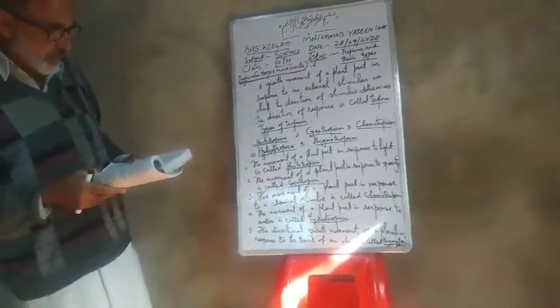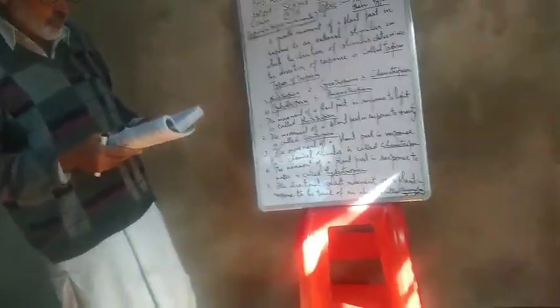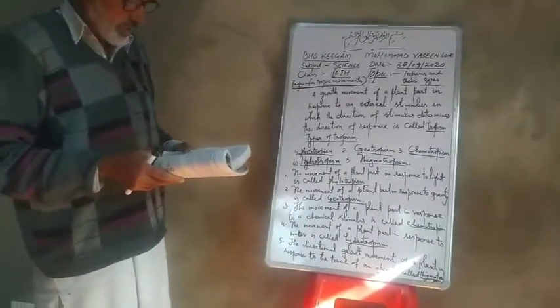The movement of a plant part in response to gravity is called geotropism. If the plant part moves in the direction of gravity, it is called positive geotropism. If the plant part moves against the direction of gravity, it is called negative geotropism. For example, the roots of a plant move downwards in the direction of gravity, so the roots show positive geotropism. On the other hand, the stem of a plant moves upwards against the direction of gravity, so the stem shows negative geotropism.